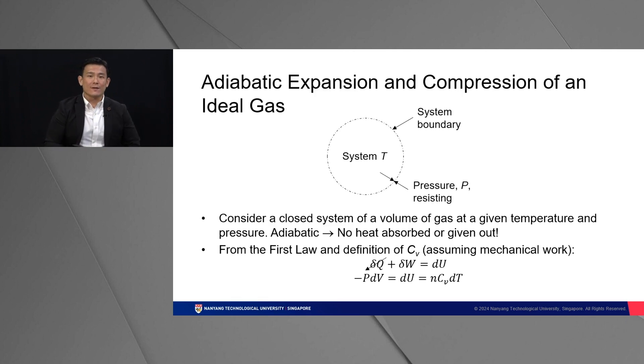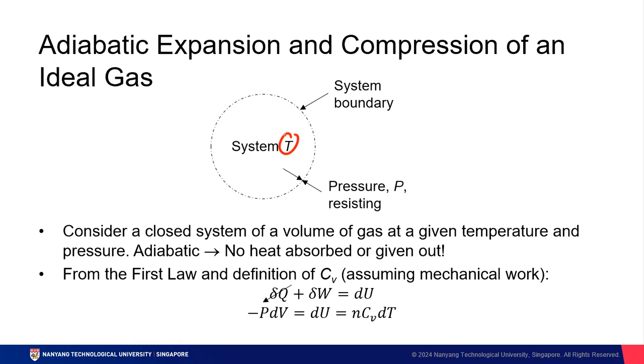We've talked about adiabatic expansion. We've also talked a little bit about ideal gas. How about the adiabatic expansion and compression of an ideal gas? Let's consider a system like this. It's a closed system. And it has a volume of a gas at a given temperature and pressure. It is adiabatic. Hence, no heat is absorbed or given out.